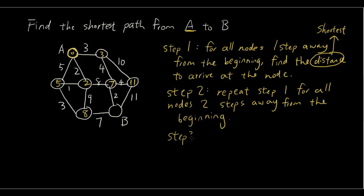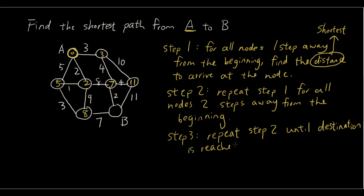Step 3: repeat step 2 until the destination is reached. So we go: 7 plus 2 is 9, 11 plus 11 is 22 — that's way too big — 8 plus 7 is 15. So 9 is the shortest.